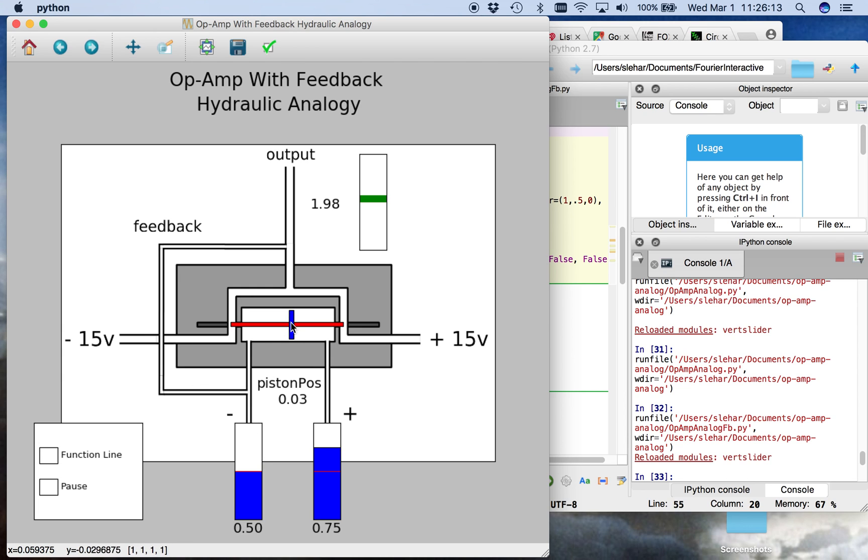And if I readjust this piston location, this pressure, the piston responds with a proportional response. It is self-regulating itself by negative feedback to always produce an output here that's proportional to this input.